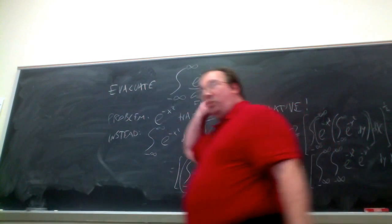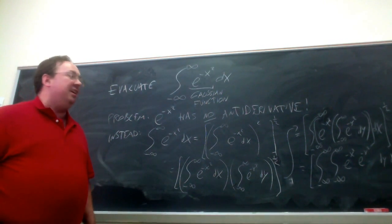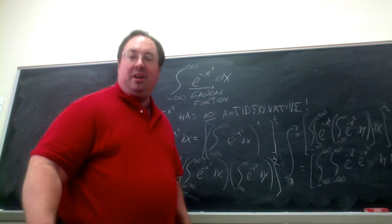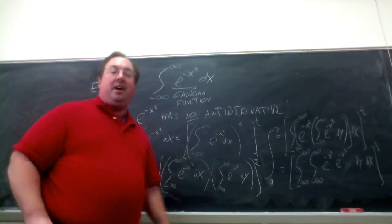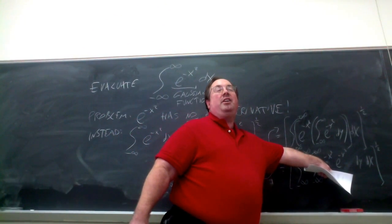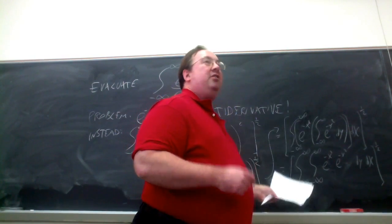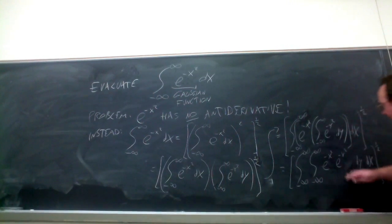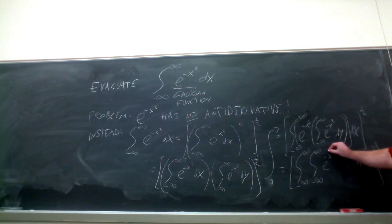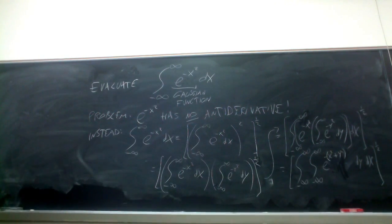Now, it seems that no matter what class I'm teaching, even Calculus 4, what people have the most trouble with is the algebra. Using laws of exponents, how can we rewrite e to the negative x squared times e to the negative y squared? When you have the same base you can add the exponents, so I can rewrite this as e to the minus, quantity x squared plus y squared. That's all using properties from Cal 2.